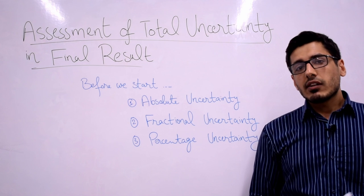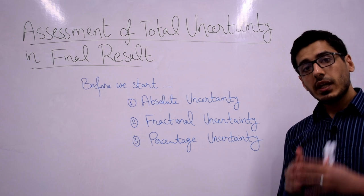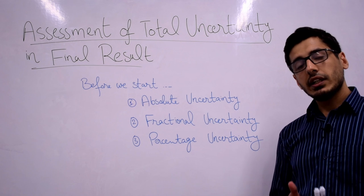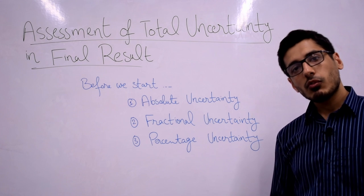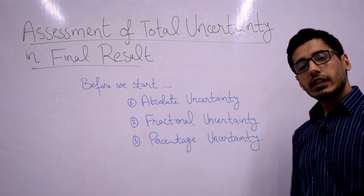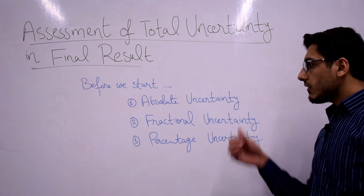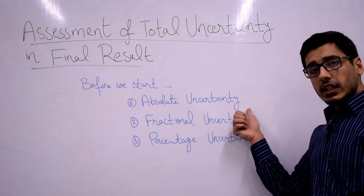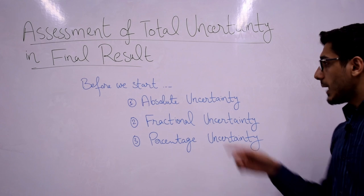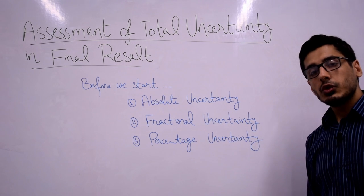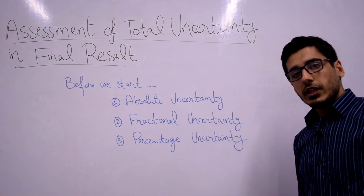But before we start, let's get some definitions out of the way. These definitions will make the basis for calculating the total uncertainty in different cases, so you should properly understand them before we get into calculating the uncertainties. Our first definition of today is absolute uncertainty. You should remember that the absolute uncertainty is actually equal to the least count of the device with which the measurement is taken.